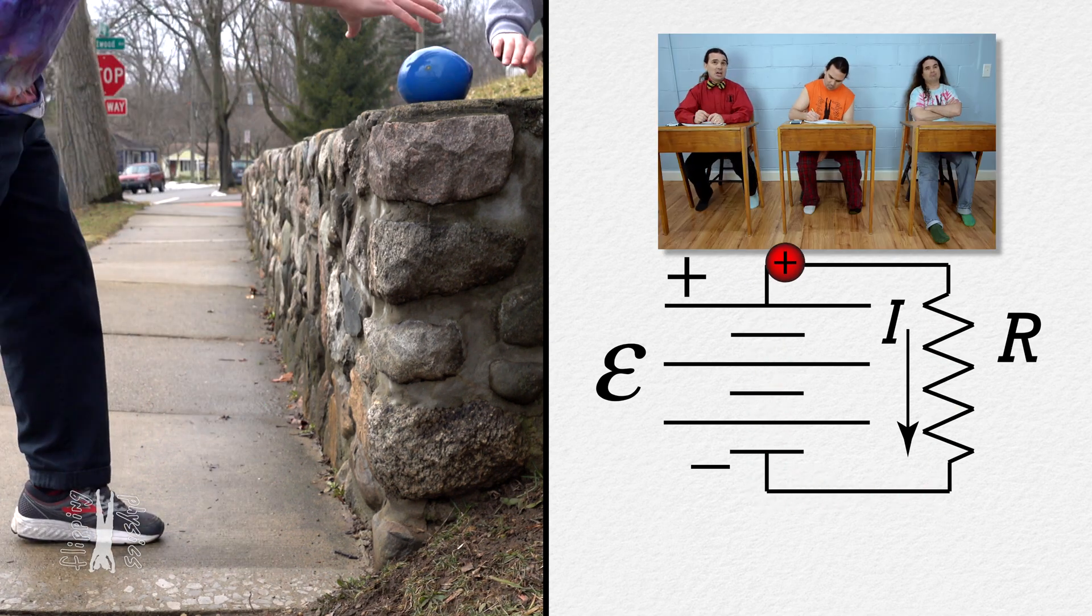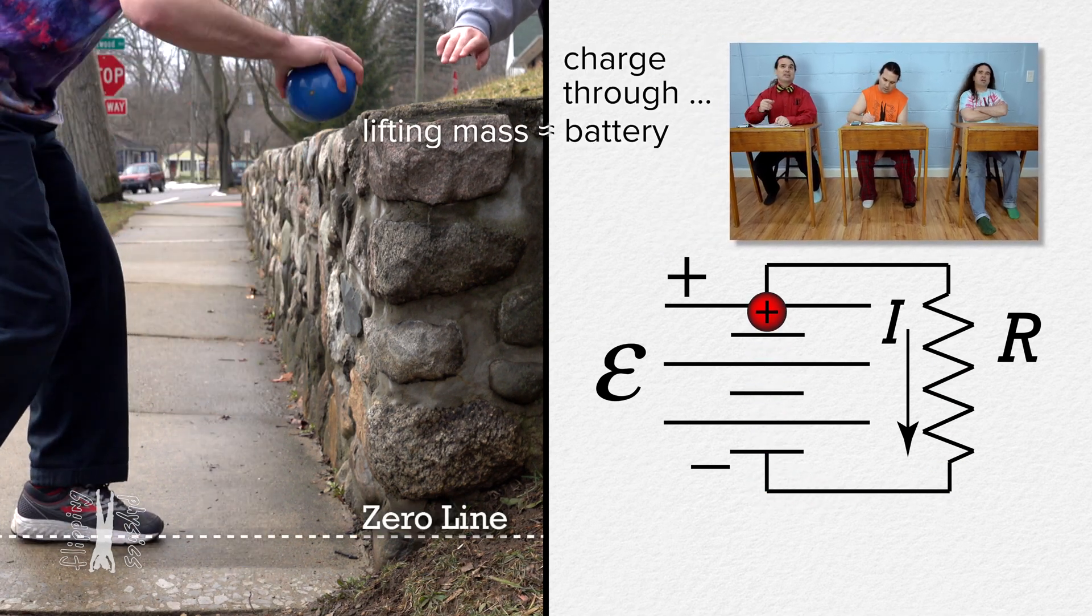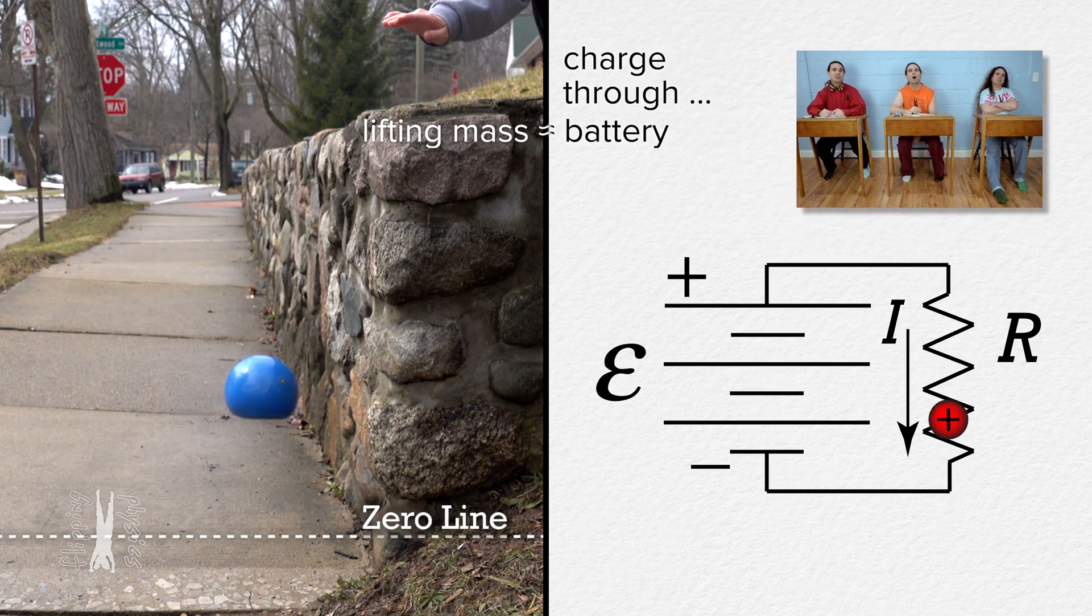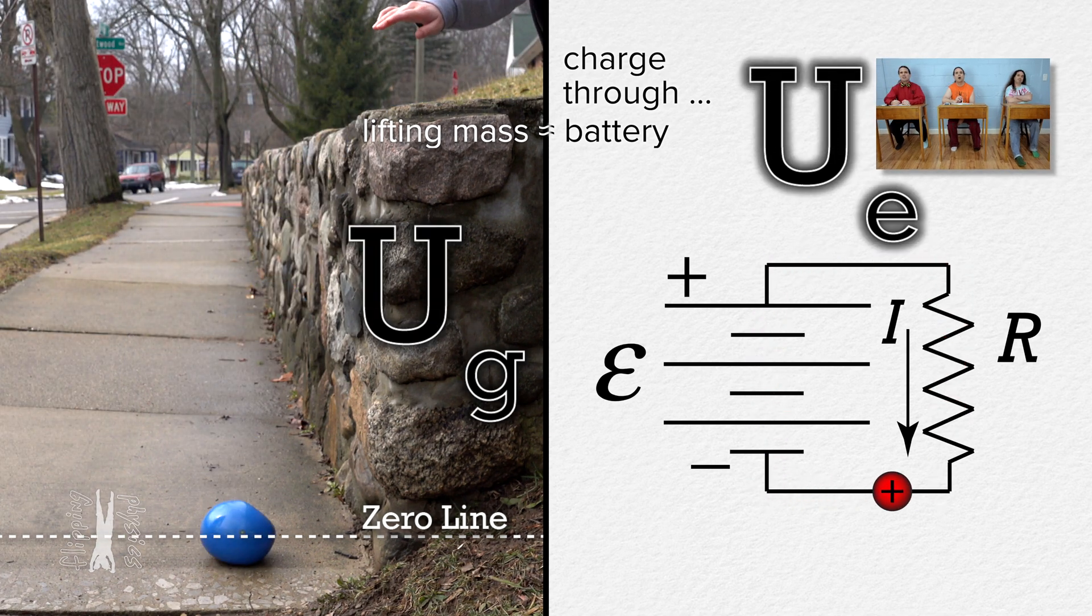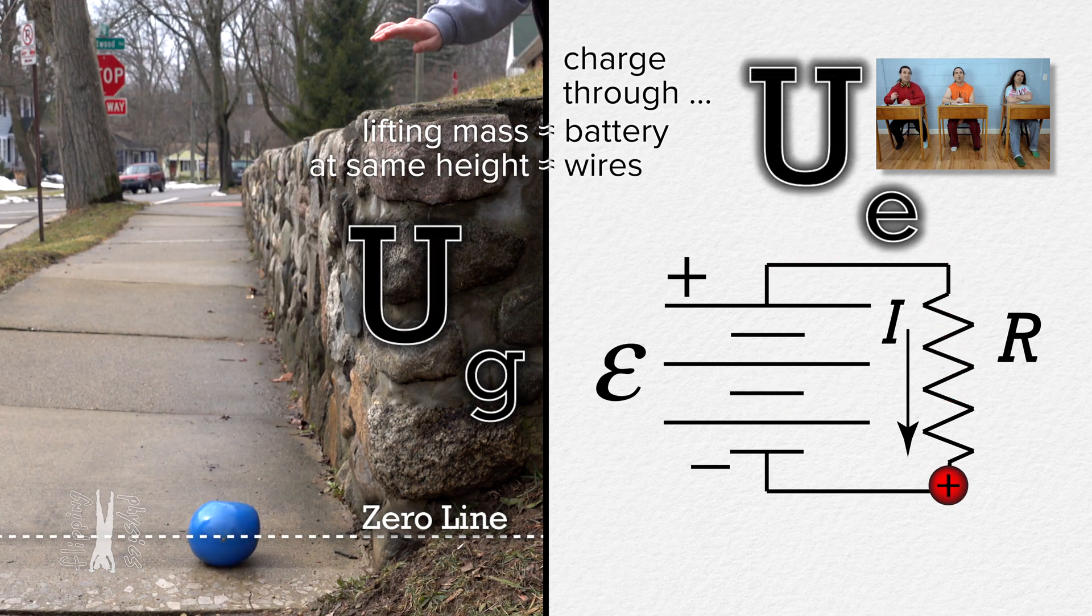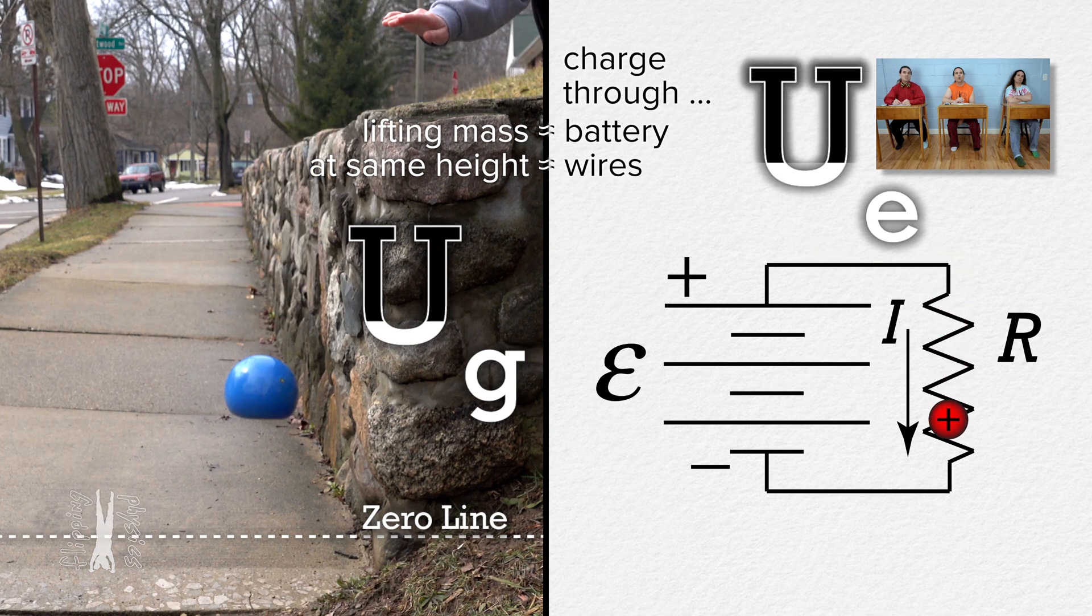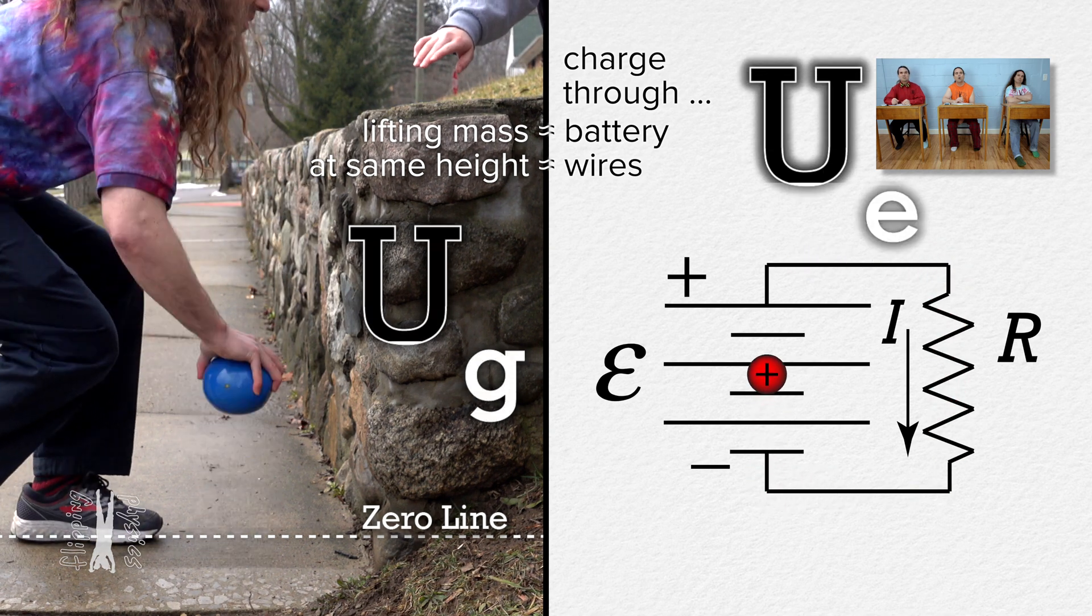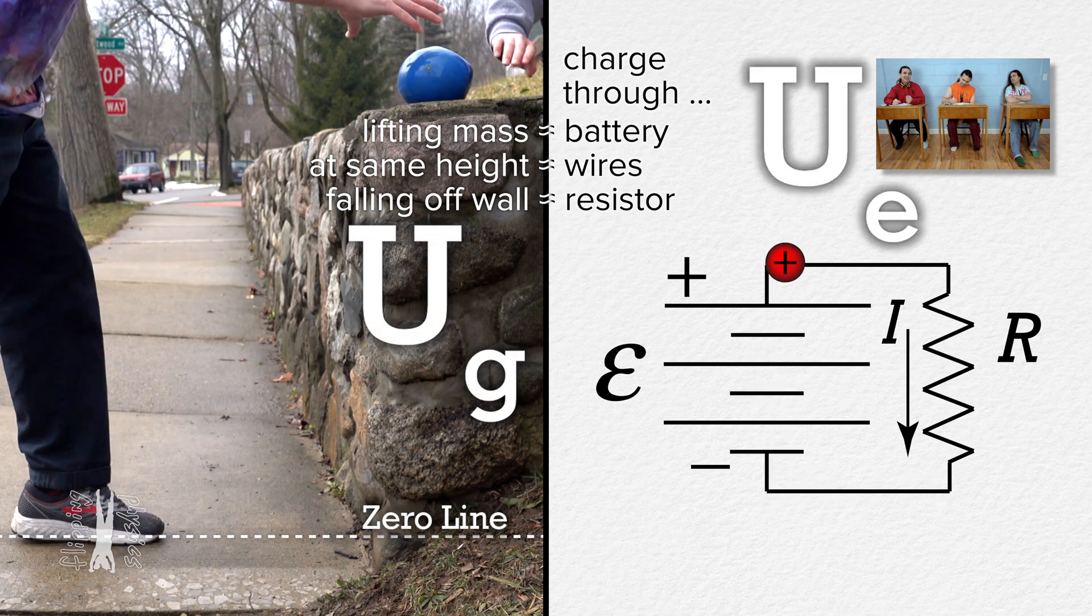As the charge moves up through the battery, the charge gains electric potential energy just like the mass gains gravitational potential energy as you lift it. As the charge moves along the top wire, its electric potential energy stays constant just like the mechanical energy of the mass stays constant as it sits at the top of the wall. As the charge moves down through the resistor, the electric potential energy of the charge is converted to heat energy just like the gravitational potential energy of the mass is converted to kinetic energy.